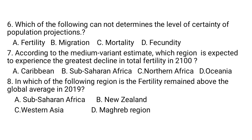Question 6: Which of the following cannot determine the level of certainty of population projections? A. Fertility. B. Migration. C. Mortality. D. Fecundity. Fertility, migration, and mortality are the most determinant factors for the level of certainty of population projections. Therefore, fecundity is the answer — it cannot determine the level of certainty of population projections.